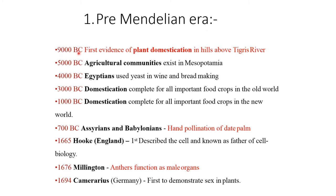First, the pre-Mendelian era. In 9000 BC, the first evidence of plant domestication in the hills by the Tigris river was found; agriculture communities existed in Mesopotamia. In 700 BC, hand pollination of date palm was observed.